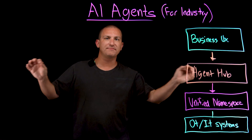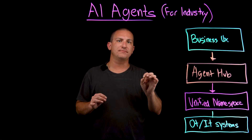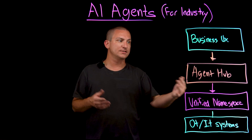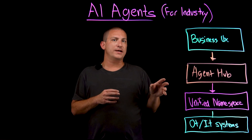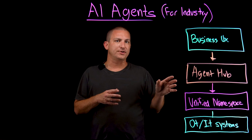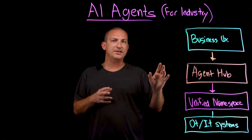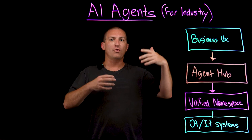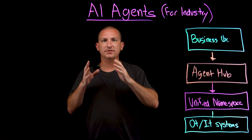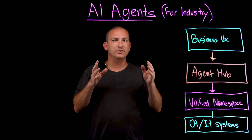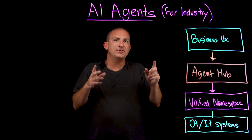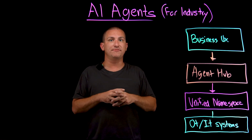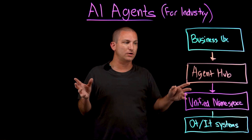First, a predictive maintenance agent. It subscribes to vibration and temperature streams from every rotating asset in your facility. When the model forecasts a bearing failure in 42 hours, the agent opens a work order in the CMMS, orders a replacement part, and slots the repair onto the next planned changeover. One automotive plant watched unplanned downtime fall by nearly a third in the first quarter.